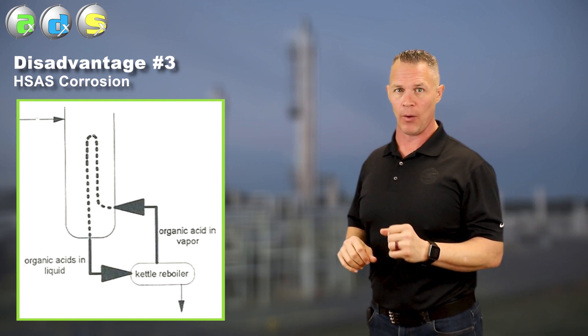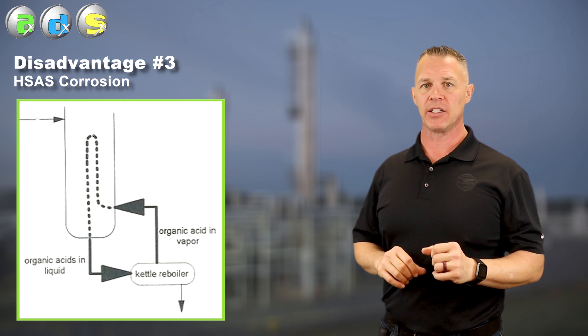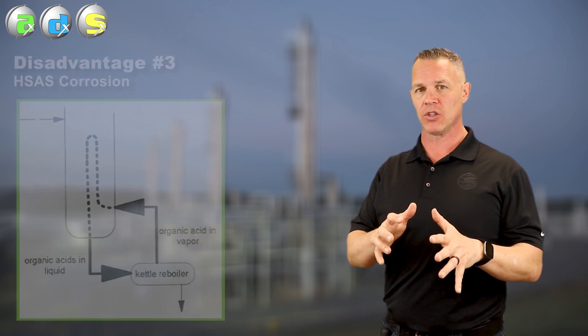We've seen a lot worse corrosion related to heat-stable salts in MDEA units. At about 2.5% by weight heat-stable amine salts (also called bound amine), that equates to roughly 12,000 ppm of acid anions when you add up the formate, acetate, etc. Other amines can go higher, but not MDEA. So that is a disadvantage.